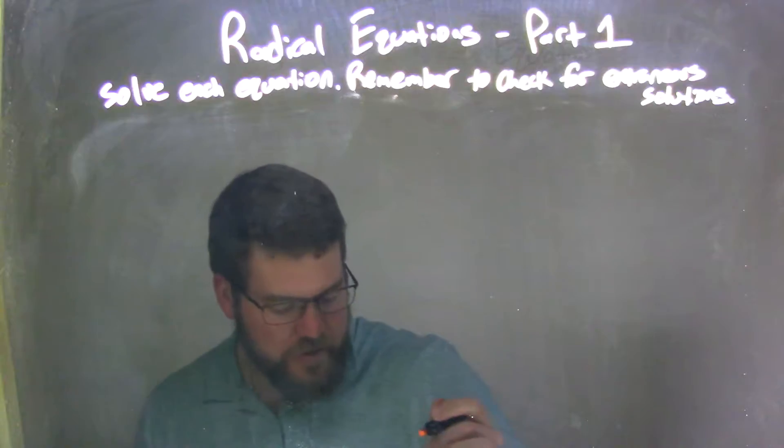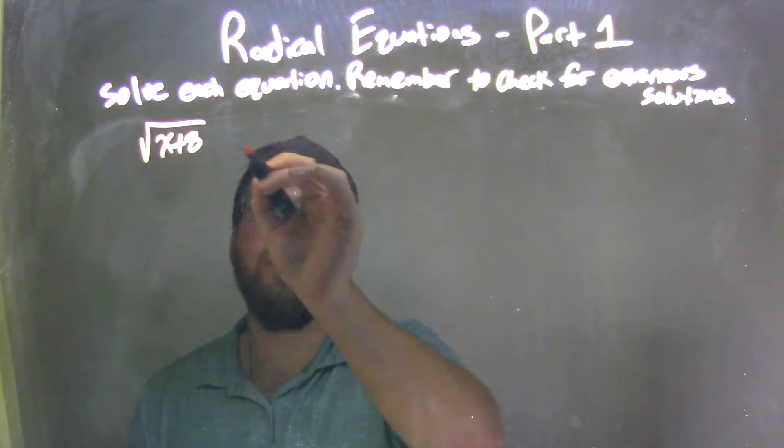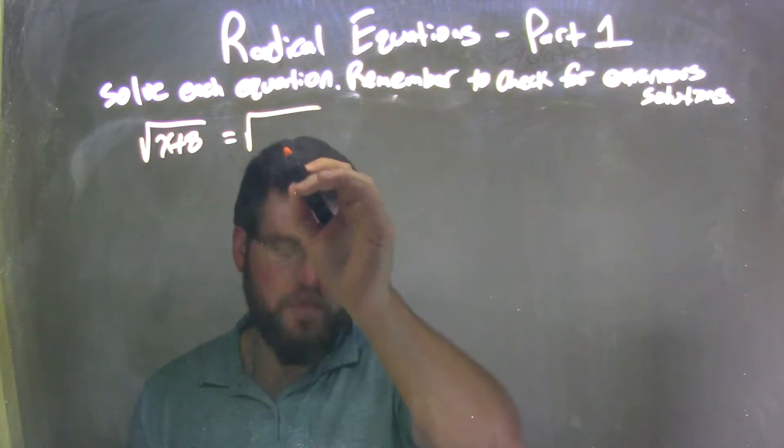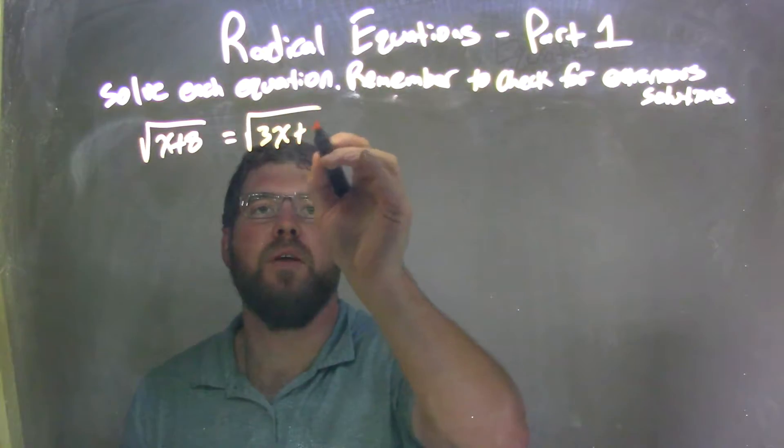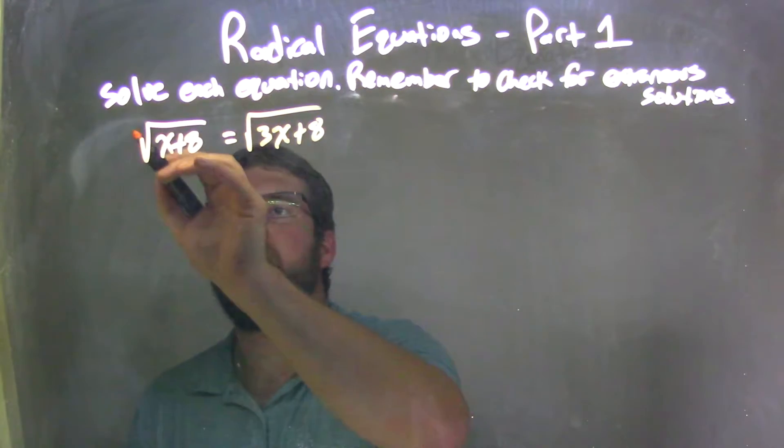If I was given this equation here, the square root of x plus 8 equals the square root of 3x plus 8, I need to square both sides. So I'm going to square both sides.